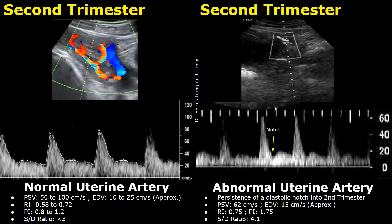Here is another example of an abnormal uterine artery spectral Doppler waveform. We see a diastolic notch right here. The resistive index is slightly raised at 0.75. The pulsatility index is also raised at 1.75, and the SD ratio is also increased at 4.1.